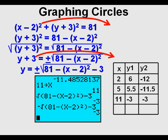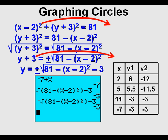For x equals 11, we plug in 11 and get a y1 of negative 3 and a y2 also of negative 3. For x equals negative 7, we plug in negative 7 for x and get a y1 of negative 3 and a y2 also of negative 3.